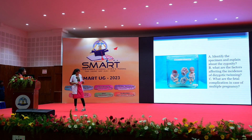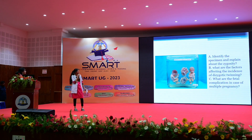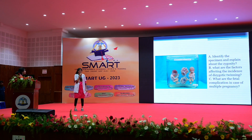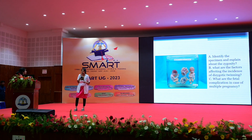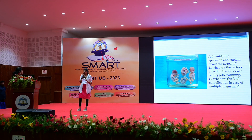Identify the specimen and explain about the zygosity. Zygosity can be of two types: dizygotic twins and monozygotic twins. About 75% of twins are dizygotic and monozygotic are only 25%. In dizygotic twins, there is fertilization of two ova with two different spermatozoa, so there will be separate chorion, separate placenta, and separate amnion. Monozygotic twins result from splitting of the fertilized ovum, and are most commonly monochorionic diamniotic.